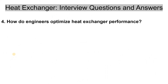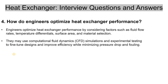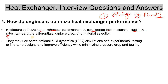The next question is: how do engineers optimize heat exchanger performance? There are two scenarios — when you are sizing the heat exchanger, and when the heat exchanger is already in a plant. During sizing, engineers consider factors such as fluid flow rate (Q), temperature differentials (delta T), surface area, and material selection (MOC).